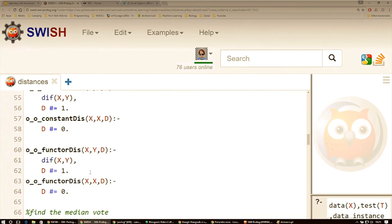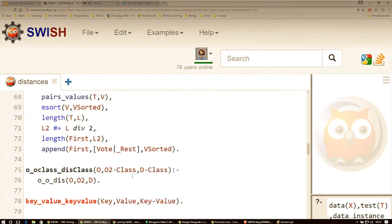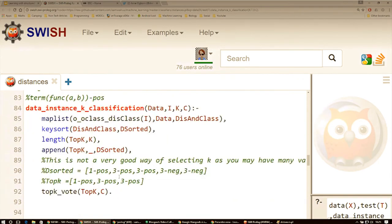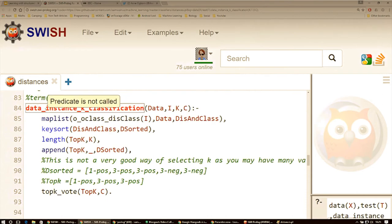So we're going to have this term here, data in this predicate, sorry, data instance k classification, which is going to be a relationship between the data, the instance that we want to classify, the k that we want to select, and then its classification.